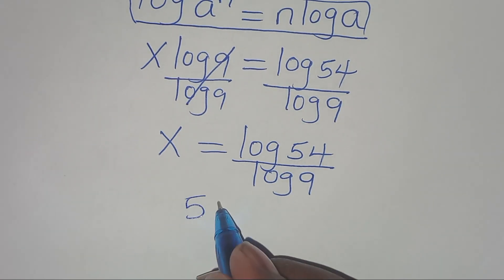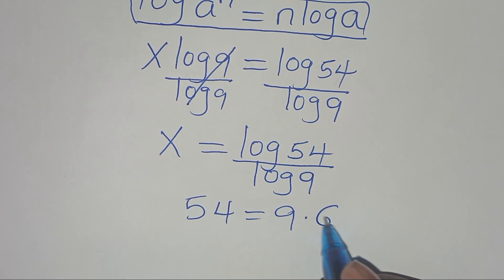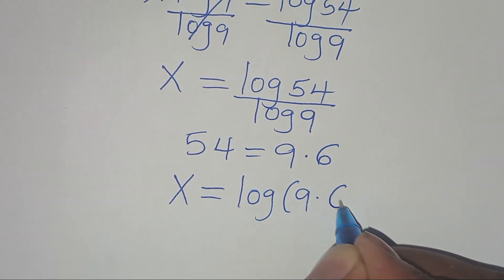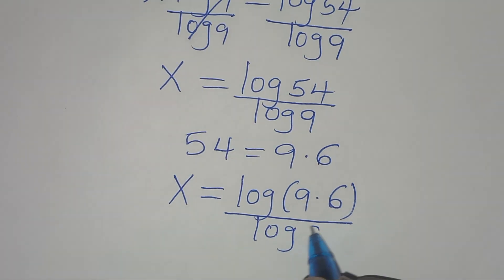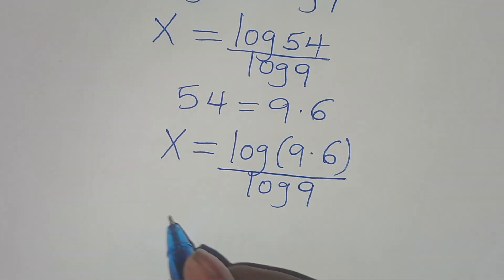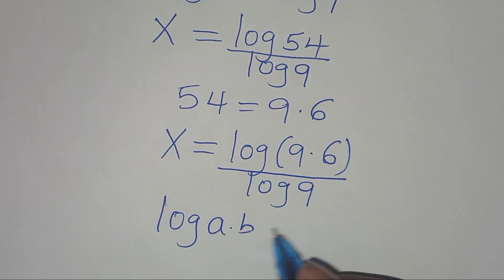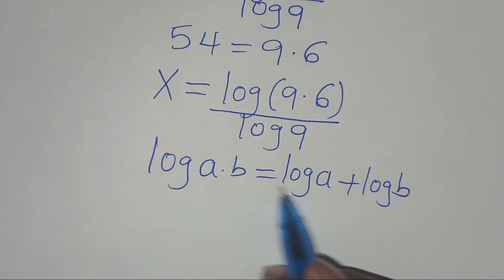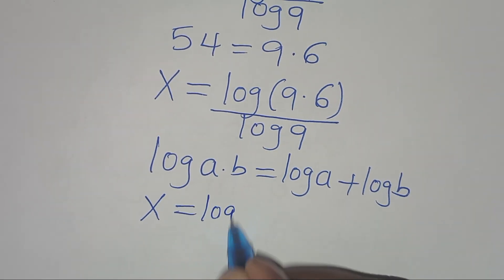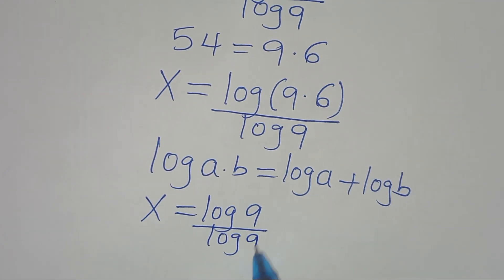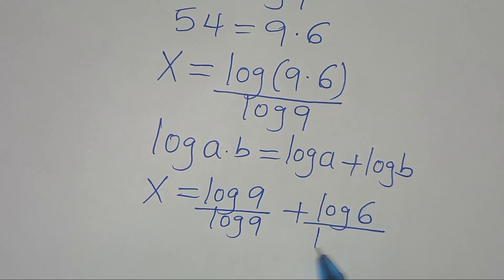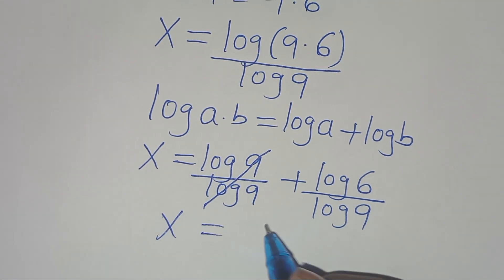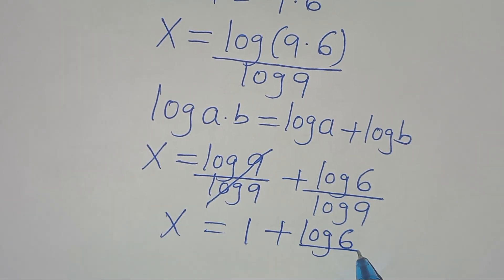We can express 54 basically as 9 times 6. Substituting, we have x is equal to log(9 times 6) divided by log 9. Now log(9 times 6) is in the form of log(a times b), which we can express as log a plus log b. Applying this logarithm property, x is equal to log 9 over log 9, plus log 6 divided by log 9. Simplifying, log 9 over log 9 equals 1, so x is equal to 1 plus log 6 over log 9.